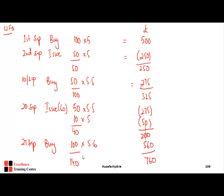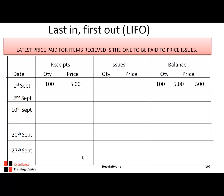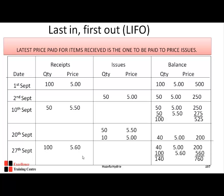Reconciling the LIFO answer: closing inventory is £760 for 140 units. First issue is £250; in the second issue, 50 units go at £5.50 and 10 units at £5. All confirmed correct.